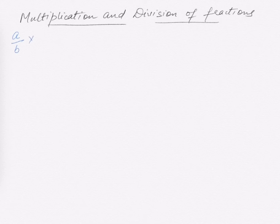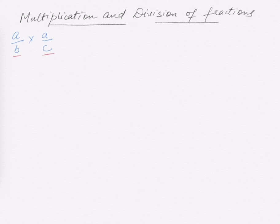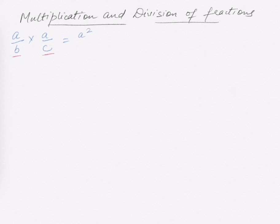If we have the term of the form a/b times a/c, here b and c are in the fractional form and we need to multiply them. The numerators multiply: a times a is a squared, divided by b times c, which is bc.